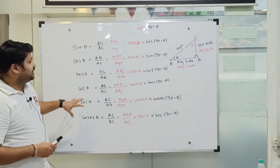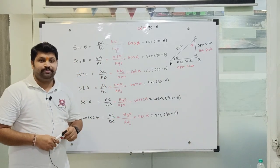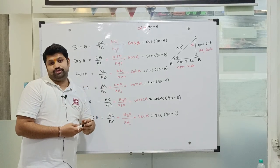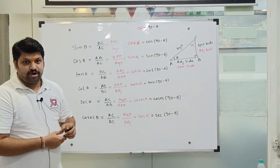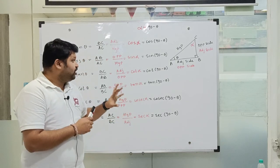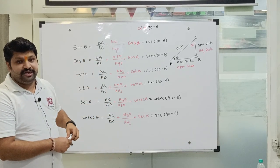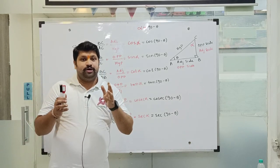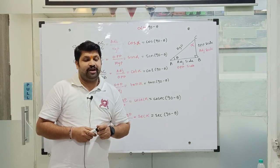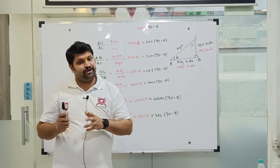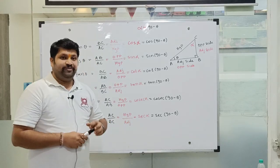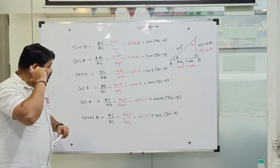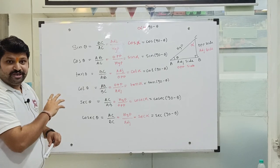So this is the relationship between the trigonometric ratios and the ratios of their complementary angles. We are going to require this theory when we talk about the values of trigonometric ratios of certain angles, which we will do in the next video. Now let us take a few examples on this.